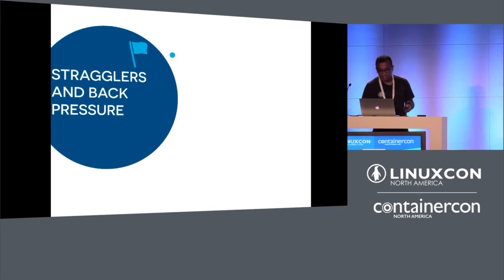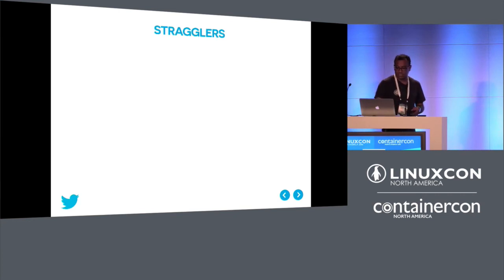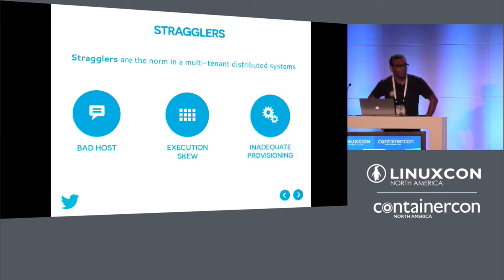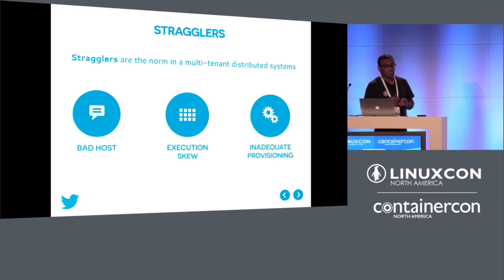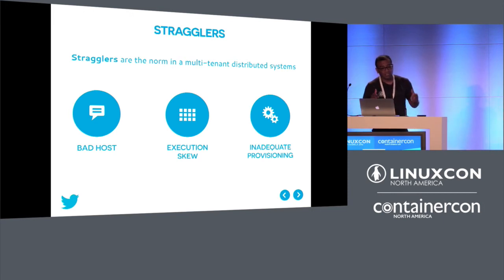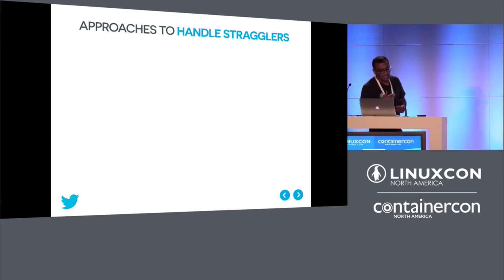Stragglers are the norm in multi-tenant distributed systems. There are three primary reasons they occur: bad hosts that process slower than expected; execution skew, where a popular key like a viral tweet hits the same process with far more data than it can handle; and under-provisioned resources. There are multiple approaches to handling stragglers: drop data from senders to stragglers, slow down senders to match the straggler's pace, or proactively detect and reschedule stragglers.